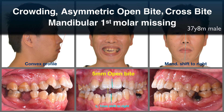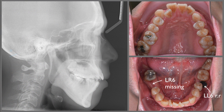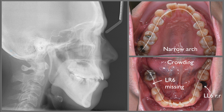The patient was a 37-year-old male with a convex profile, 5mm open bite, and mandible shifting to the right. The lower left first molar had a resorbed root. The lower right first molar was missing for a long time. Both upper and lower arch forms were quite narrow with severe anterior crowding.